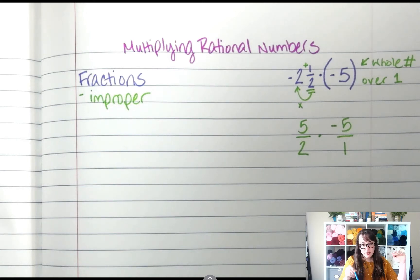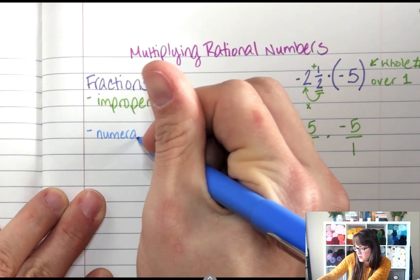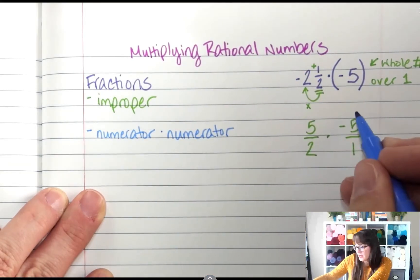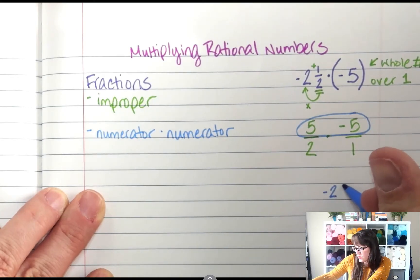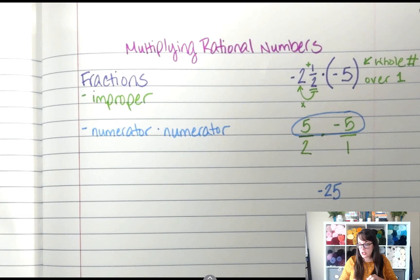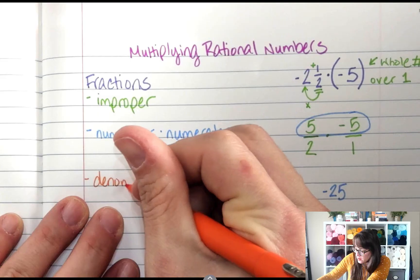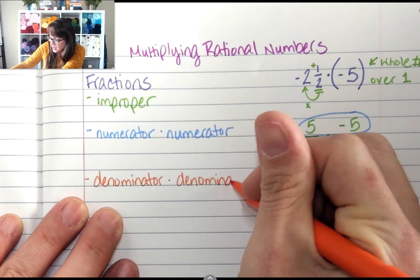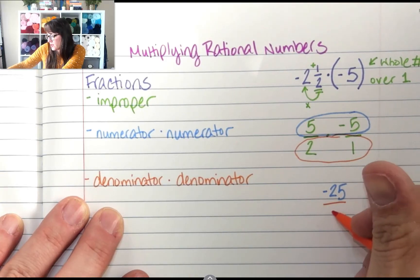Now that I have two improper fractions, I'm going to multiply the numerators and multiply the denominators. So I'm going to do numerator times numerator. So over here, that's going to be 5 times negative 5, which is negative 25. Don't forget your negative. And then I'm going to do denominator times denominator. So 2 times 1, which is 2. So over 2.